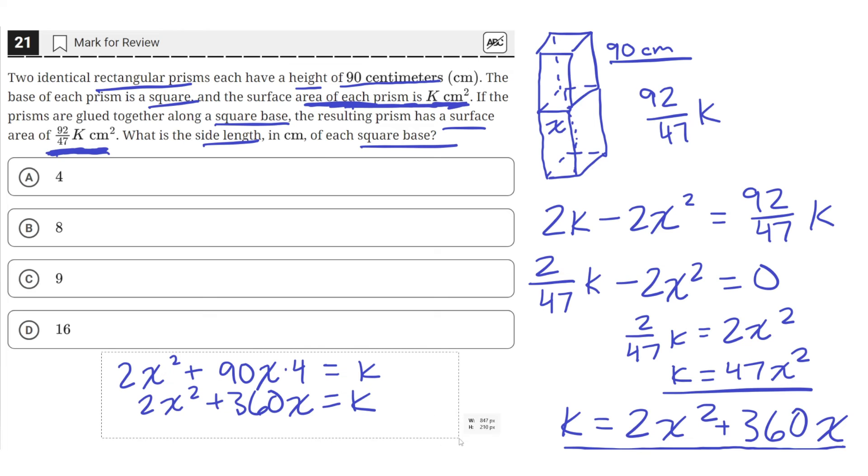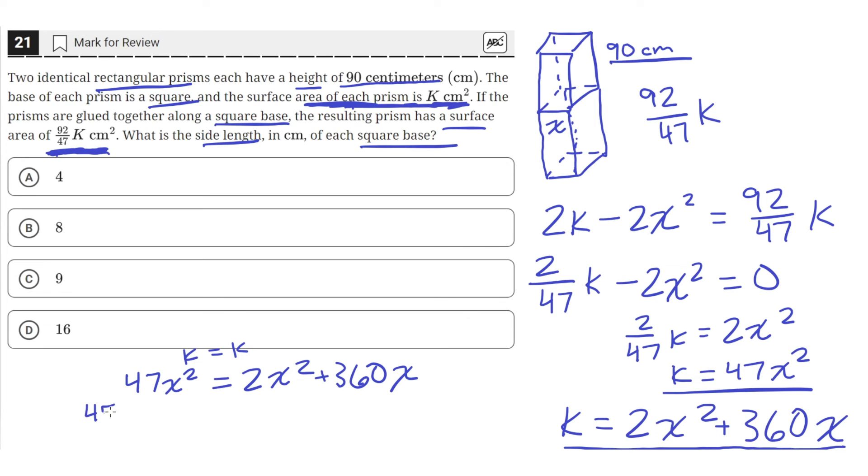Let's set k equal to k. We'll say k equals k, and then we have one equation for k, that k equals 47x². And then the other one that says that 2x² plus 360x equals k as well. Now let's move this 2x² and the 360x to the other side. We'll get that 45x² minus 360x is equal to 0.